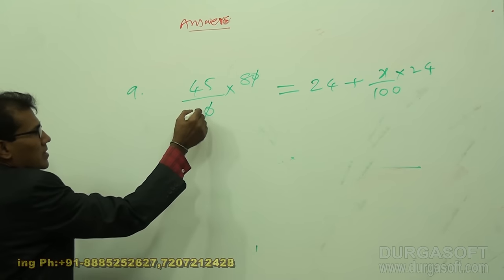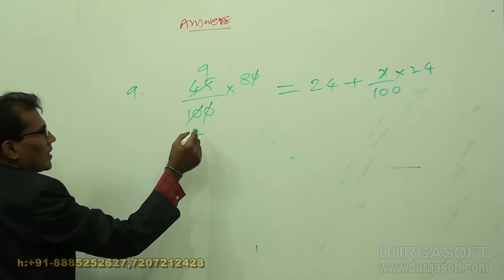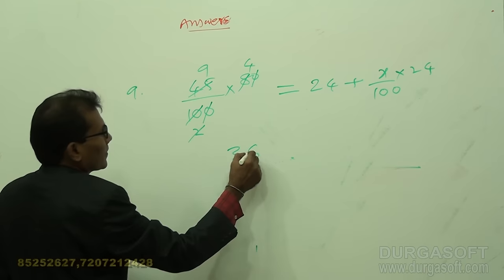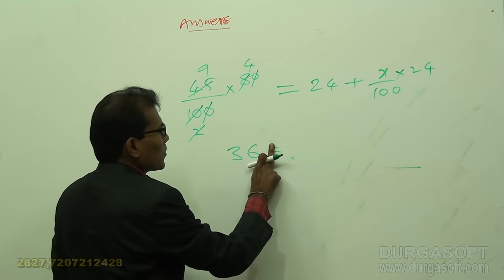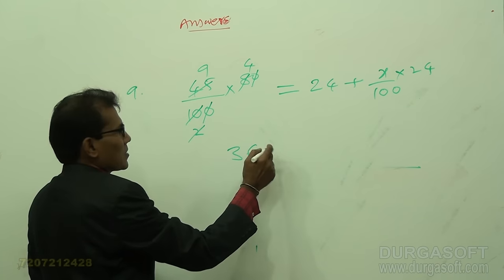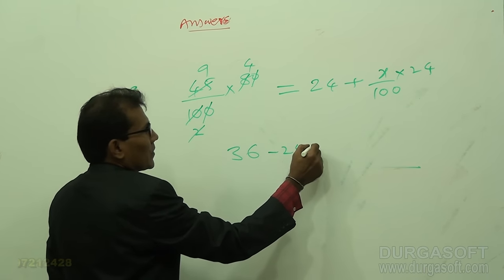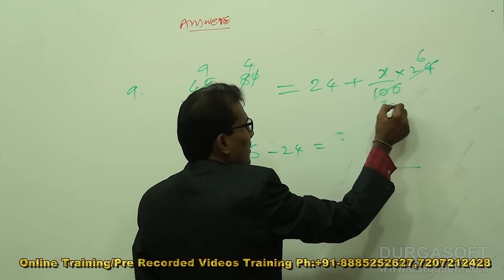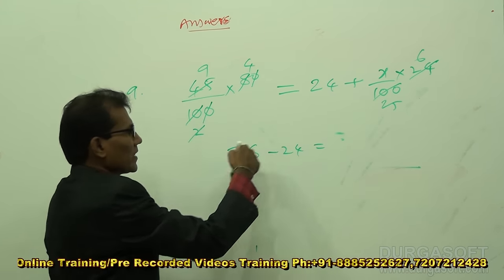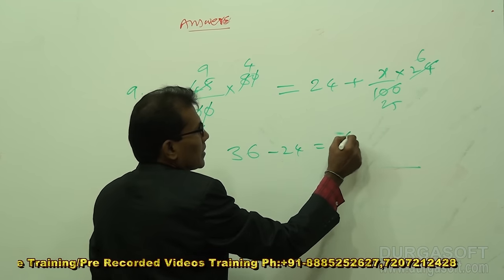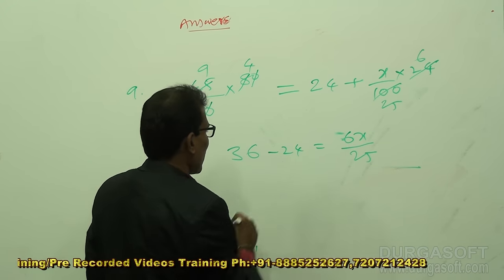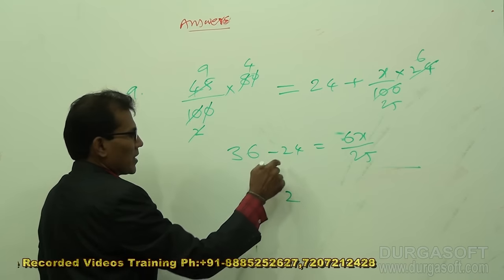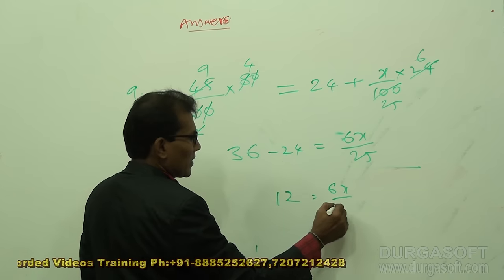Simplifying: cancel zeros, giving 9 times 4 equals 36. Collecting 24 to the other side: 36 minus 24 equals 6x/25. That gives 12 equals 6x/25. Cancelling 6 by 2 gives 2, so x equals 25 times 2, which is 50. Wait — further: x equals 25 into 2 equals 50.